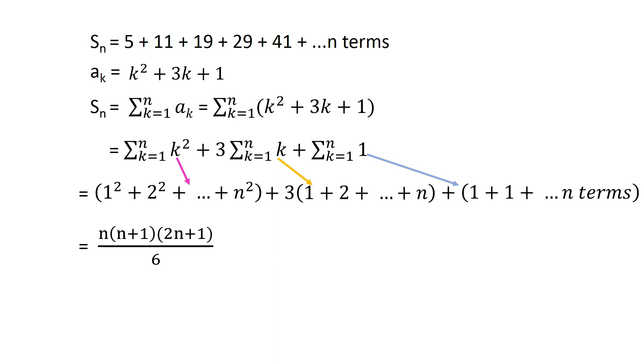We can expand the summation for each term. 1 square plus 2 square and so on up to n square equals n times n plus 1 times 2n plus 1 divided by 6. 1 plus 2 and so on up to n equals n times n plus 1 divided by 2. Adding 1 n times gives us n. These are some standard results which one must remember to solve such problems.